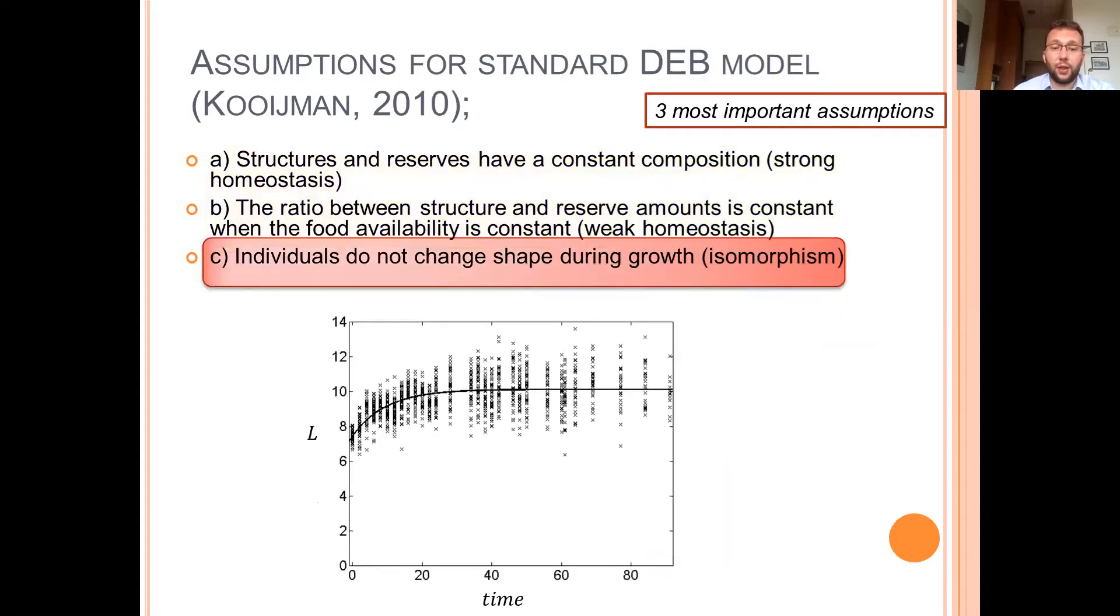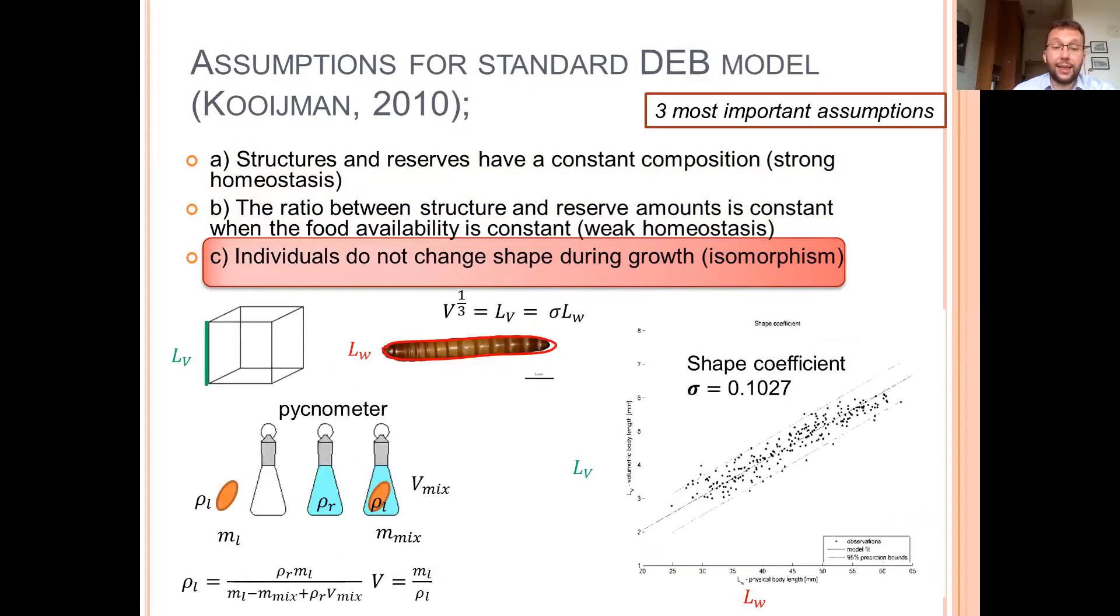We assume that the larvae are isomorphs and it was confirmed by the typical shape of the growth curve. And therefore we were able to calculate the volume and the volumetric length from physical length using shape coefficient. Physical length was larva perimeter obtained from pictures and the volume and volumetric length was measured with high accuracy using pycnometer and Archimedes principle.